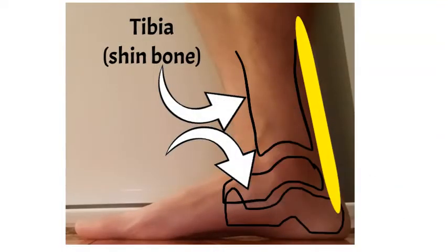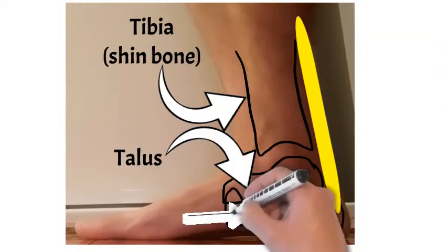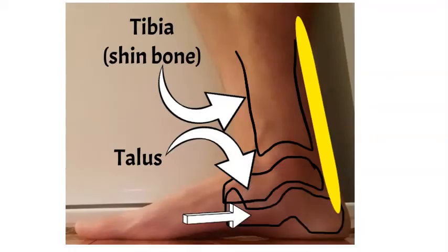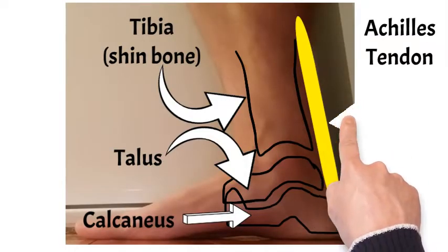The bone below that is known as the talus. It looks a bit like a peanut. And then below that is your heel bone, otherwise known as the calcaneus. The calcaneus is what the Achilles tendon inserts on. That's that yellow blob there.